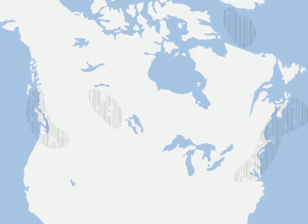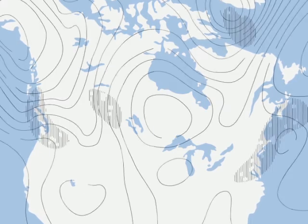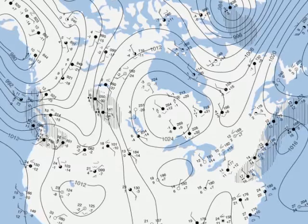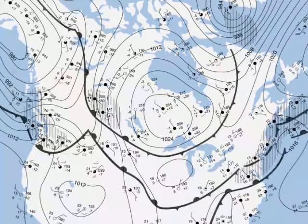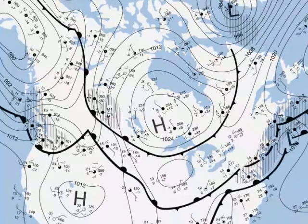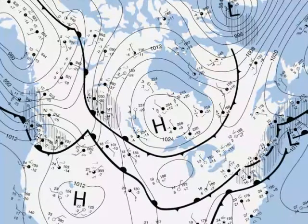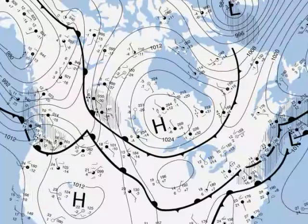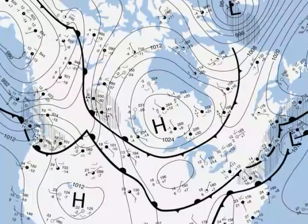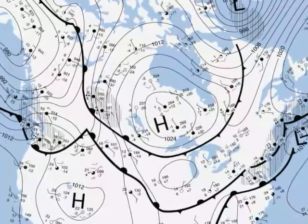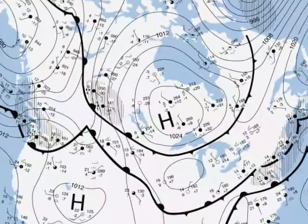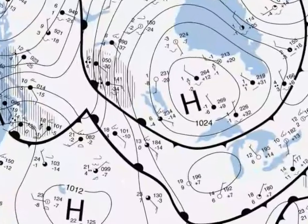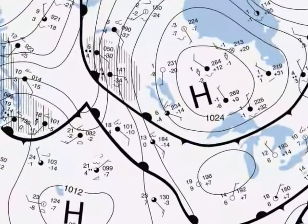Weather maps supply a great deal of information on the state of the atmosphere in a given region. To read a map like this, you have to know the international graphic code used by meteorologists.